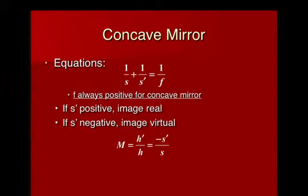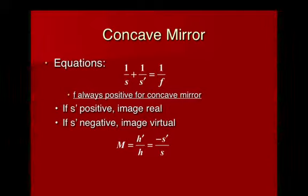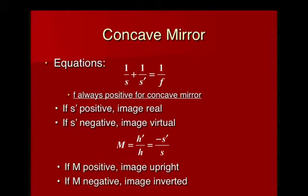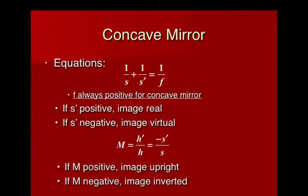The other equation is for magnification, which we already know is the ratio of the image height h prime over the object height h. But it's also the ratio of the negative of the image distance s prime over the object distance s. Now, if m calculates to be a positive value, it's an upright image. If m calculates out to be a negative value, it's an inverted image.